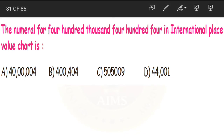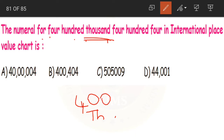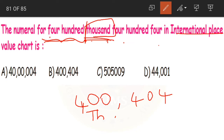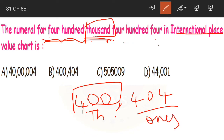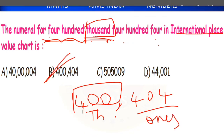Next: the numeral for 400,404 in the international place value chart is dash. 400 is in the thousands period, so it becomes 400,000. Then 404 is in the ones period. In the international system, a comma is placed after the thousands period: 400,404. Option B becomes our correct answer.